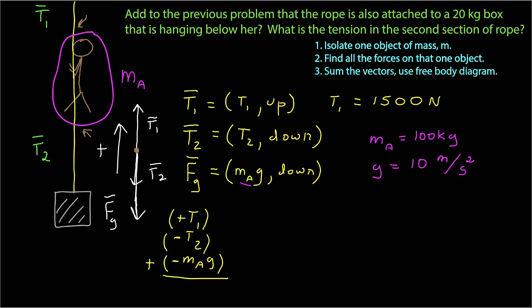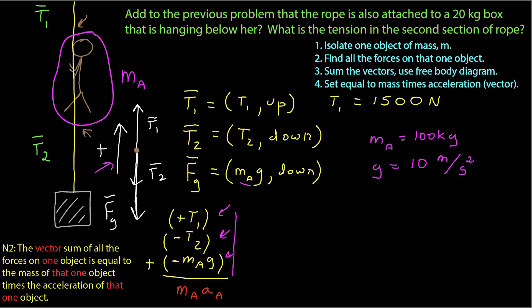Now I want to sum the vectors using a free body diagram. My free body diagram has a dot representing the object and forces in appropriate directions with their tails on that point. Tension 1 is up; tension 2 and the force due to gravity are down. I have a coordinate system with the positive axis pointing up. In one dimension the sign represents the direction, so I have positive T1, negative T2, negative m sub a times g, all summed together.